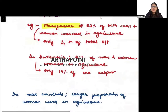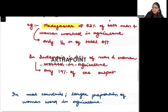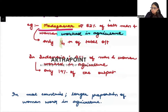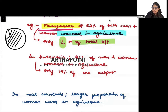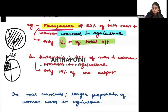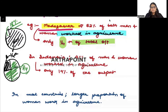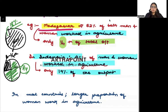For example, Madagascar has 82% of its workforce in agriculture but they are only contributing to 25% of the total GDP. So almost the entire workforce is in agriculture, yet contributing to only one-fourth of GDP. Similarly, Indonesia has 41% of its workforce in agriculture contributing to only 14% of output — again showing low productivity in agriculture.